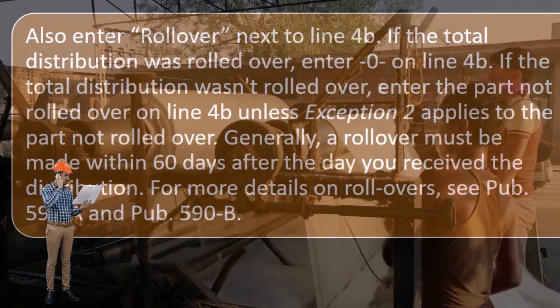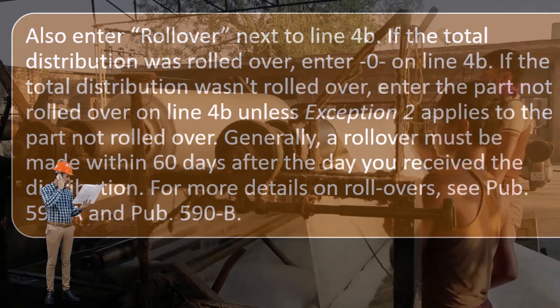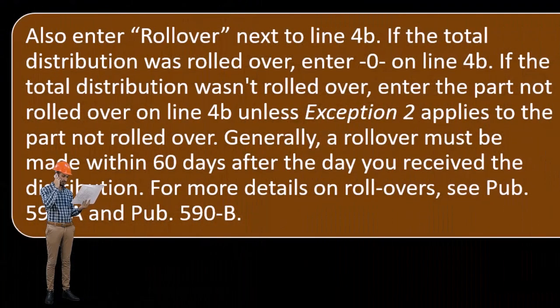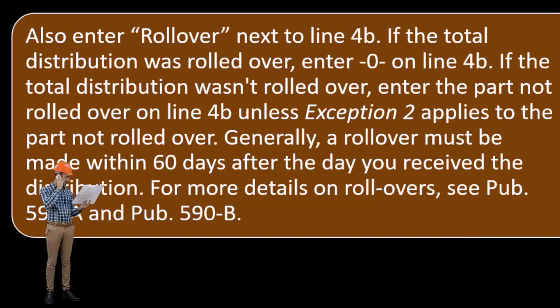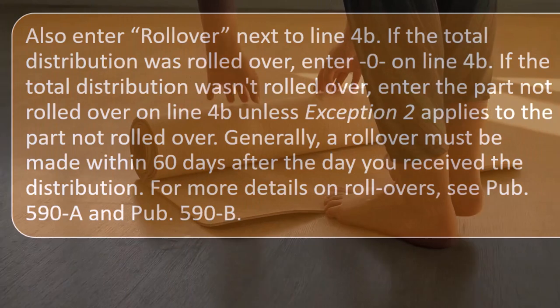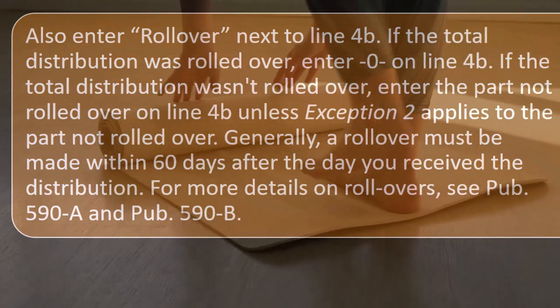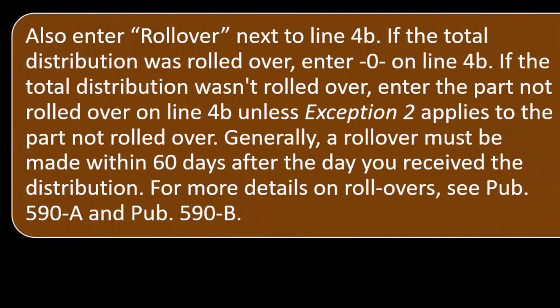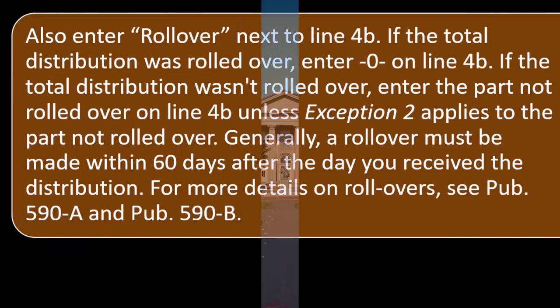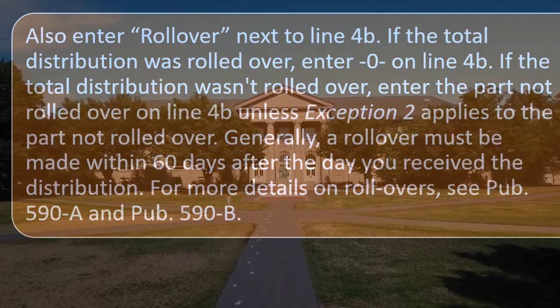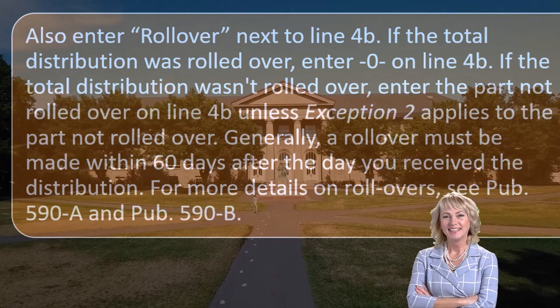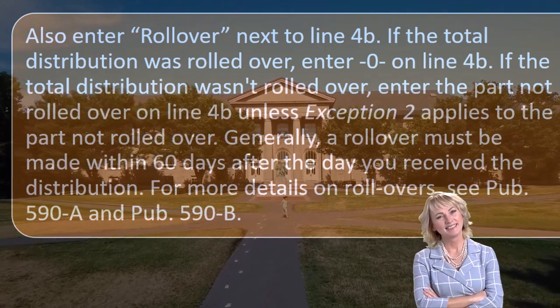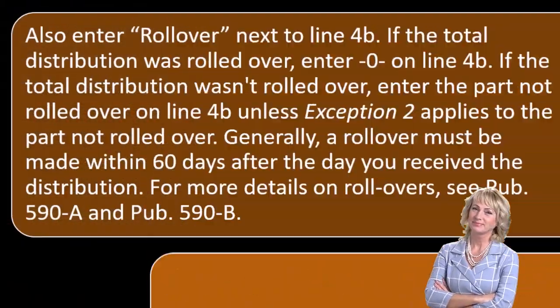If the total distribution wasn't rolled over, enter the part not rolled over on line 4B unless exception 2 applies to that part. Generally, a rollover must be made within 60 days after the day you receive the distribution — there's a time limit. Usually these days it can be pretty much same-day if you're doing a rollover from one institution to another. You want to make sure you're within that threshold. For more details on rollovers, see publication 590A and publication 590B.